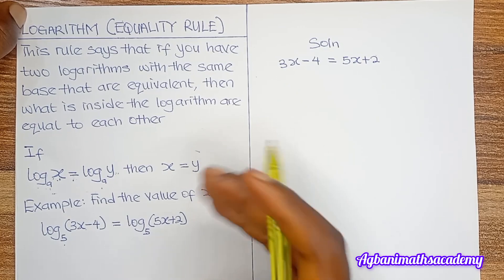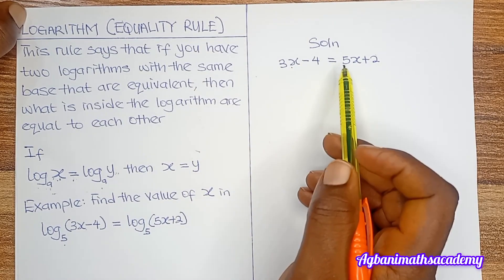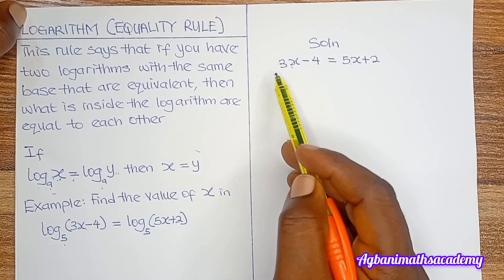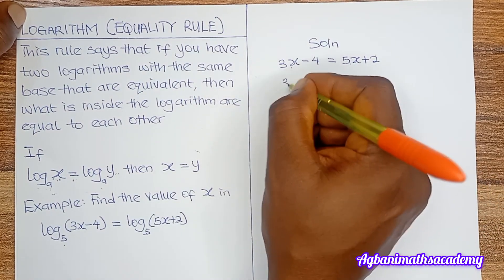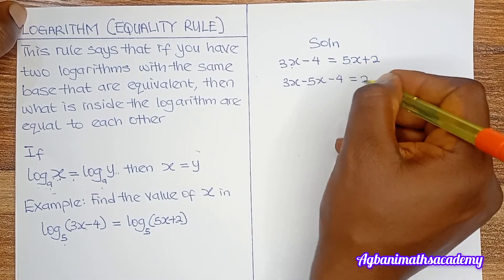The next thing we do, we solve the linear equation. So we have x on both sides of the equation, so we have to move x to one side. Let's move 5x to the left. So when we do that, we're going to have 3x minus 5x minus 4 is equal to 2.